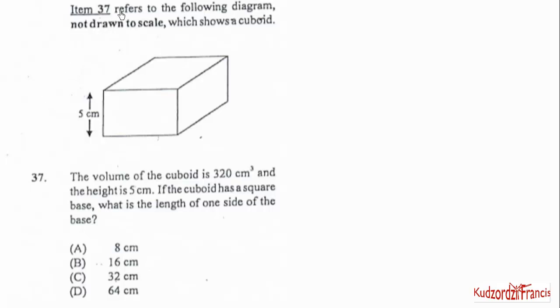Item 37 refers to the following diagram, not drawn to scale, which shows a cuboid. So this is a cuboid. The volume of the cuboid is 320 cm³ and the height is 5 cm. If the cuboid has a square base, what is the length of one side of the base?